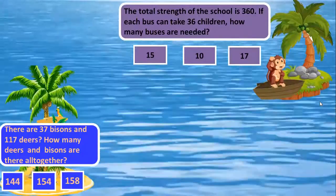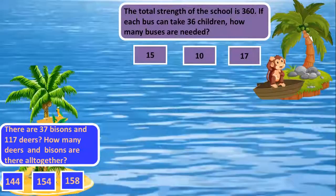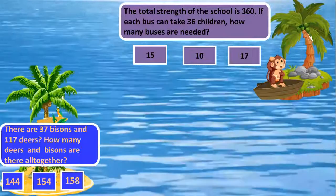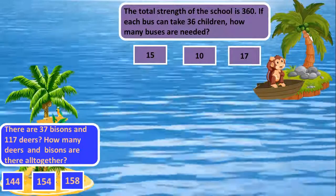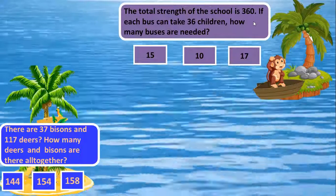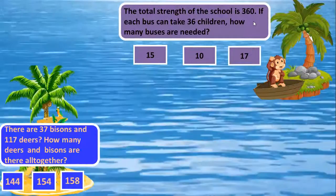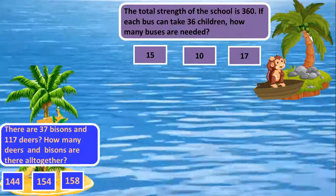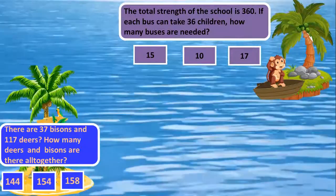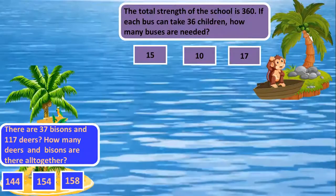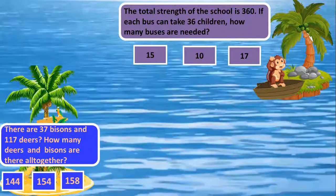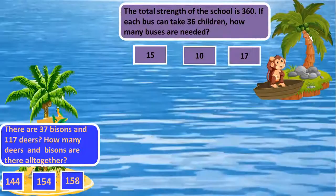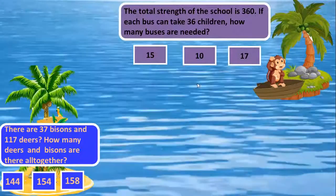The total strength of the school is 360. If each bus can take 36 children, how many buses are needed? So total strength is 360, each bus can carry 36 children. We need number of buses. To find number of buses we need to divide these two. Total strength of the school divided by number of children in each bus. So 360 by 36. Yes, we will get 10.